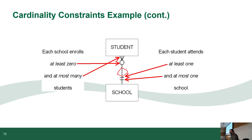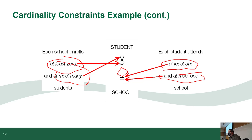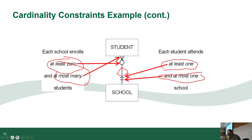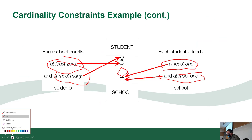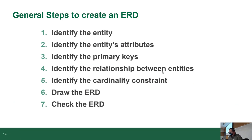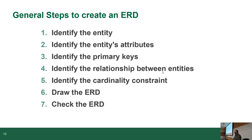Reading the diagram: the school has at least zero students — it's optional — and at most many students. Each student attends at least one school and at most one school. When we create an ERD, we follow these steps: identify the entities with their attributes, identify a primary key if possible, identify the relationships between entities, identify the constraints, draw it, then check it. You should never submit work you haven't double-checked.